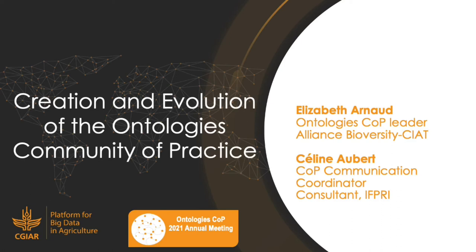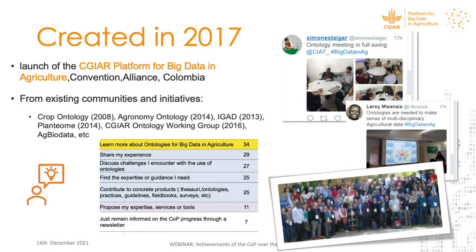I will present the creation and evolution of the community of practice. It was created in 2017 during the first convention of the CGI platform for big data in agriculture in Colombia. You have here a testimony about the very active discussion to set up the focus of the community of practice.